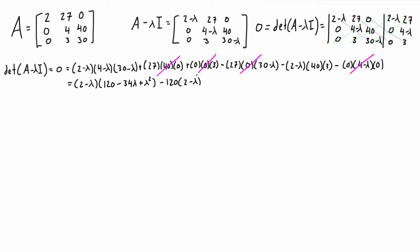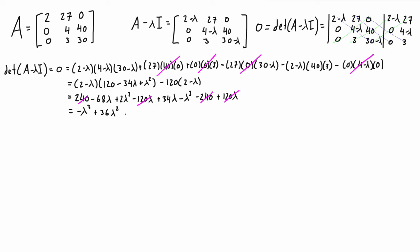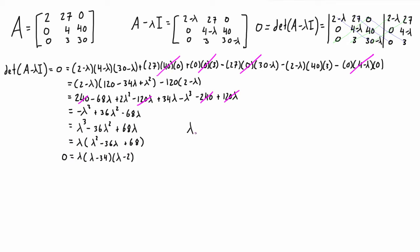We can clean this up a little bit more, and again we're going to find things cancel out. We have 240 minus 240, and minus 120λ plus 120λ. If we just keep going with the simplification, we ultimately find the three roots are 2, 34, and 0.